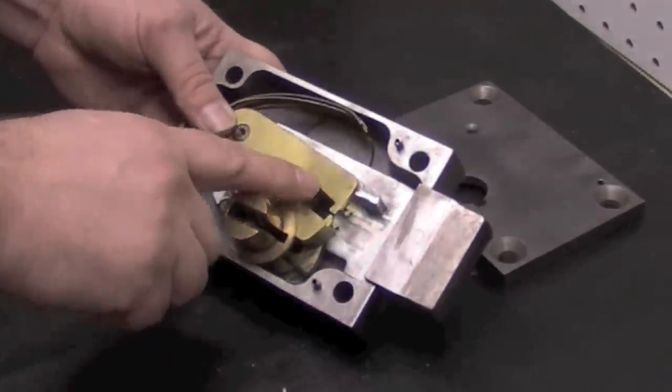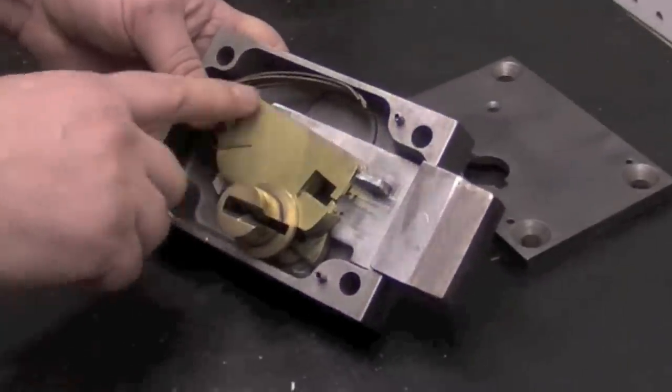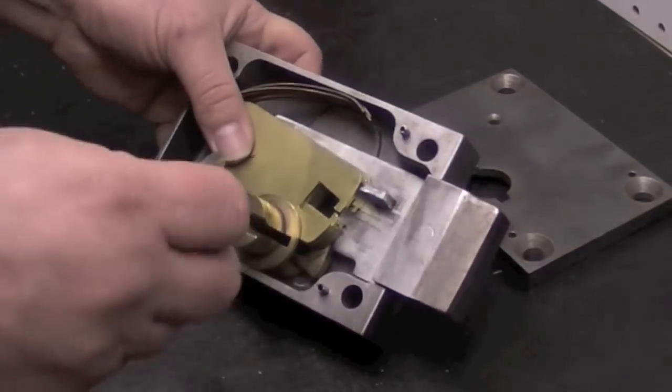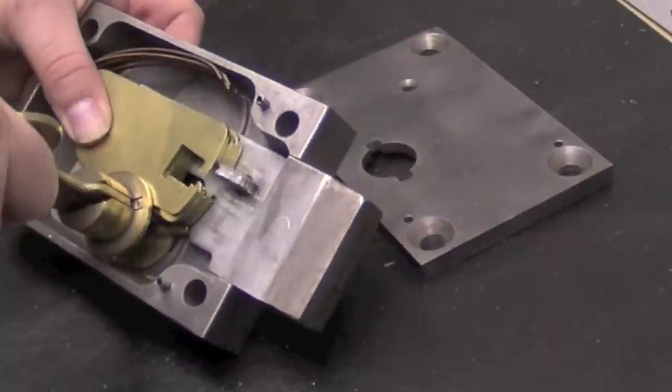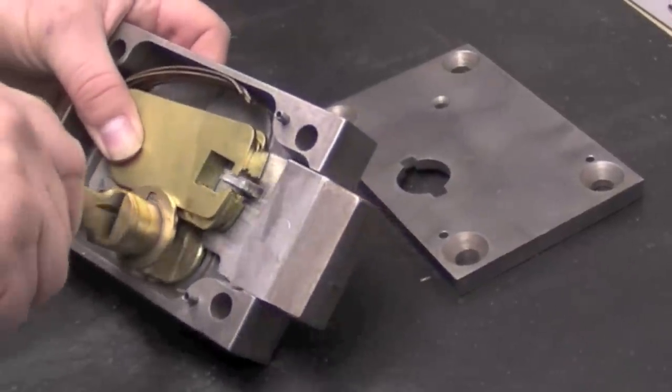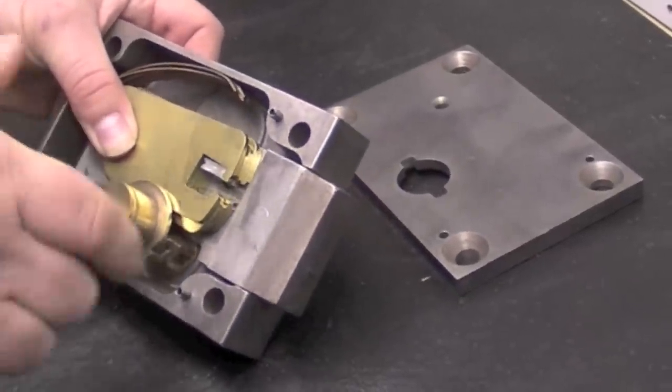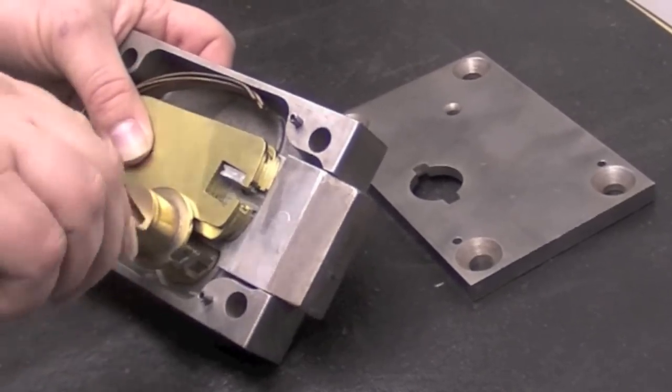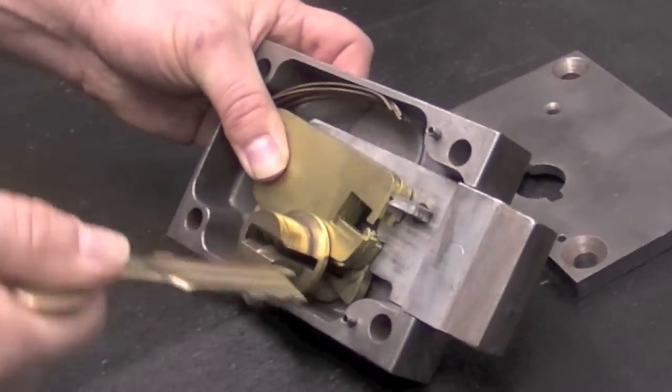The blueprints call these the tumbler pack. They're really levers and you can see what happens when you put the key in. Everything's lined up and the bolt is retracted. Again, we'll talk about the maintenance on these. This is just to show you how to pull it apart, basically.